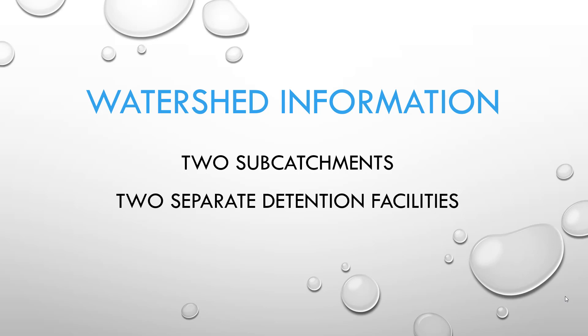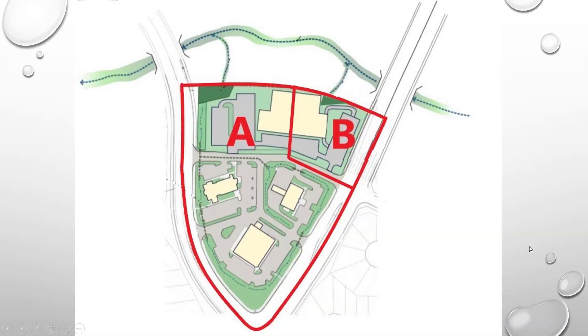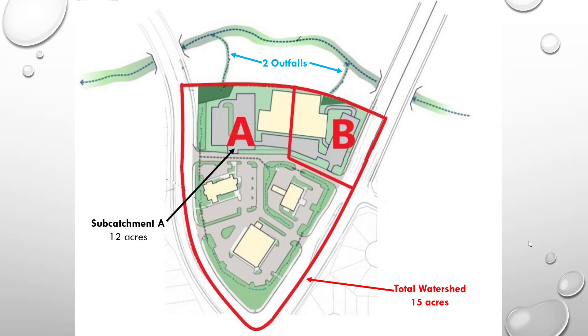I will start this video by describing a hypothetical watershed which will require two separate detention facilities, and we will override the zone volumes for one of them to compensate for the other. The hypothetical 15-acre watershed consists of two sub-catchments that drain to separate outfalls on the same receiving stream. The larger 12-acre sub-catchment A drains to an on-site extended detention basin that will provide the required storage for the water quality capture volume, excess urban runoff volume, and 100-year detention volume.